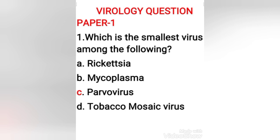B19 virus is most known for causing disease in the pediatric population; however, it can also affect adults. It is a classic cause of the childhood rash called fifth disease, or erythema infectiosum, or slapped cheek syndrome. The right answer is option C — the smallest virus is Parvovirus.